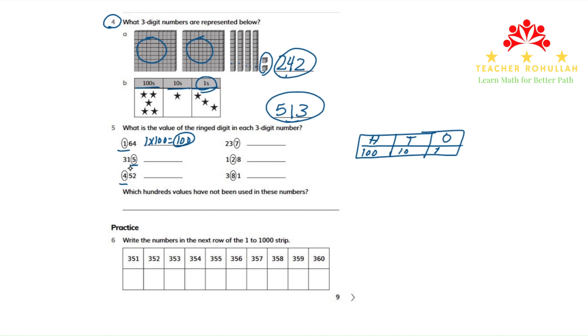On the same column, the second number is 315. The ringed number is 5. 5 is in the 1s place. So we multiply 5 by 1. 5 times 1 is 5. So the value of 5 in the 1s place is 5.